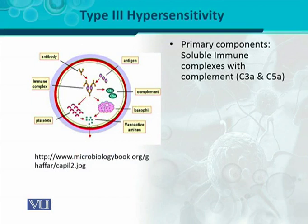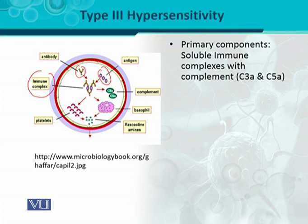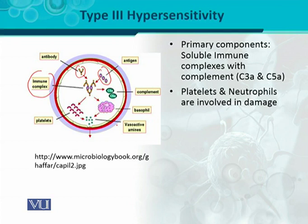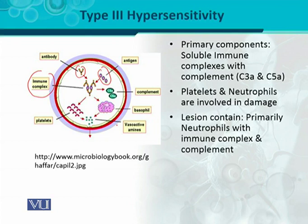The primary components of soluble immune complexes involve complement activation. When antigen enters a blood vessel and antibodies react with it, immune complexes form. These immune complexes can fix complement proteins, cause chemotaxis of basophils, cause deposition of platelets, and recruit neutrophils — all of which are involved in causing damage. When a lesion forms at the site of deposition, it contains neutrophils, immune complexes, and complement, all contributing to tissue damage.